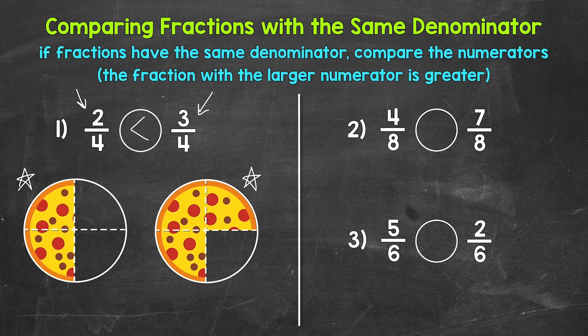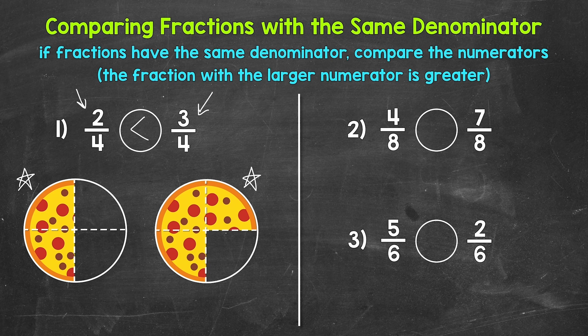Let's move on to number two, where we have four-eighths and seven-eighths. Reading this from left to right: four-eighths is greater than, less than, or equal to seven-eighths. If we have the same size total divided into eight equal pieces, which is greater — four out of eight total pieces or seven out of eight total pieces? Well, seven out of the eight total pieces — seven-eighths is greater. We have the same denominator, eight, so we can just compare the numerators. Seven is greater than four, so our symbol opens up towards seven-eighths. Reading from left to right: four-eighths is less than seven-eighths.